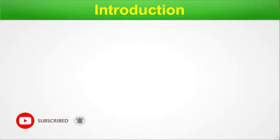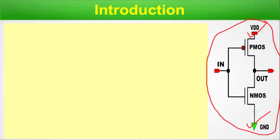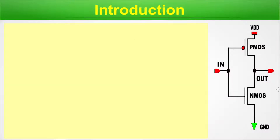Here you can see this is a PMOS and this is an NMOS — this is the basic structure of the CMOS. The PMOS is tied up to VDD and the NMOS is tied down to the ground. Here we have our input and here we have our output.